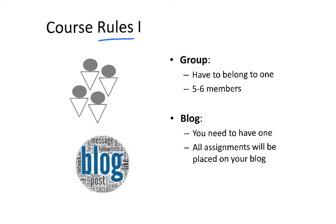Some rules for the course. First, about groups — it is mandatory that everybody in the class belongs to one group, and each group will be of five to six members. You will form your group individually by choosing your group mates. If you don't manage to find one, I will allocate you to a group. Everybody will have a blog — for those who already have one, it's a good opportunity to improve it, and for those who don't, don't worry, you will get one. All the assignments you do in the course will be placed on your blog.